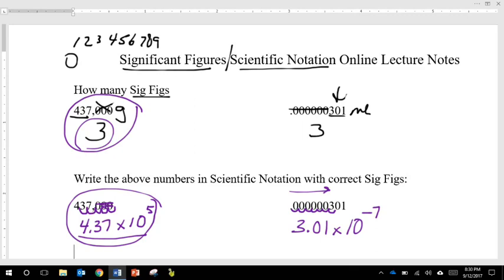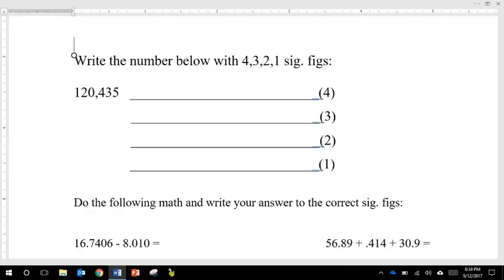So that's how you would write numbers with sig figs, and this is how you would then translate it into scientific notation, also with significant figures. Now I also showed you in class how to do it on your calculator. If you need to see that, you can come and see me after class and I will show you how to do that.